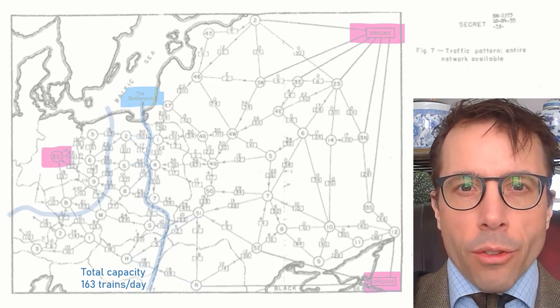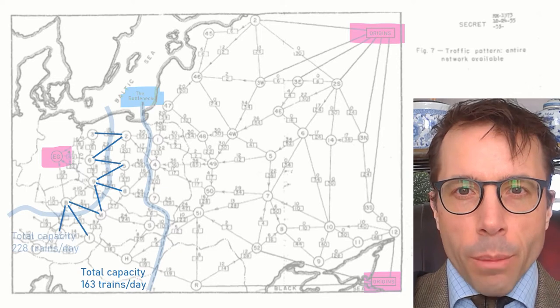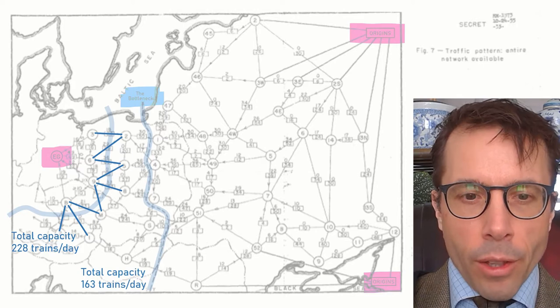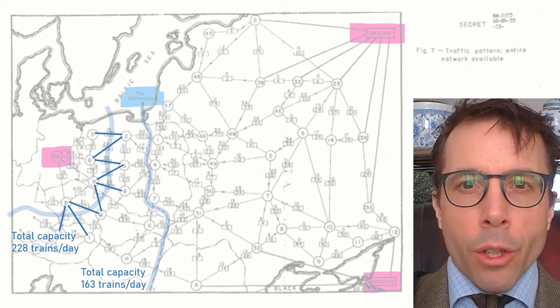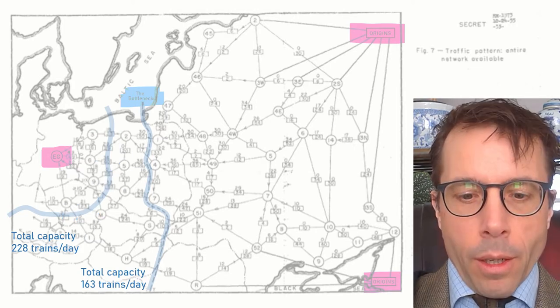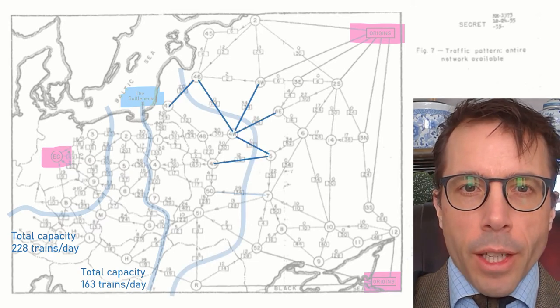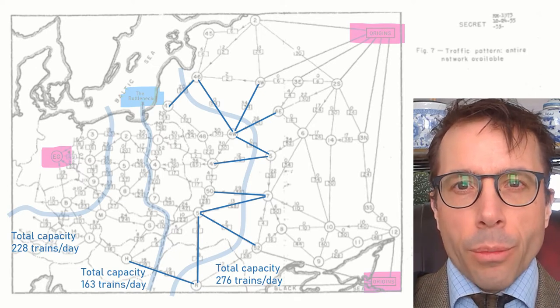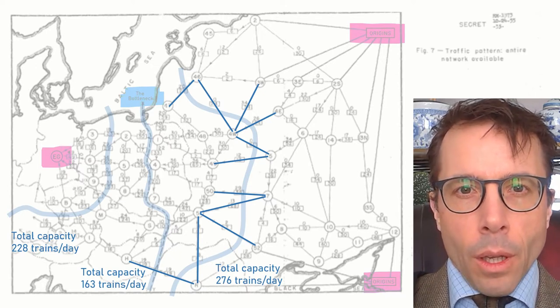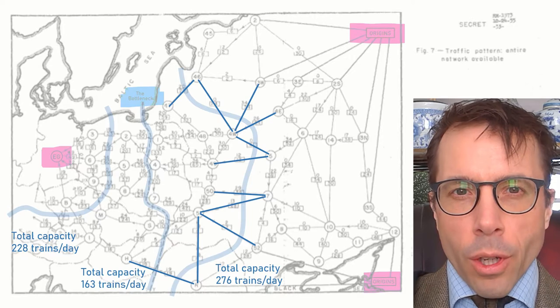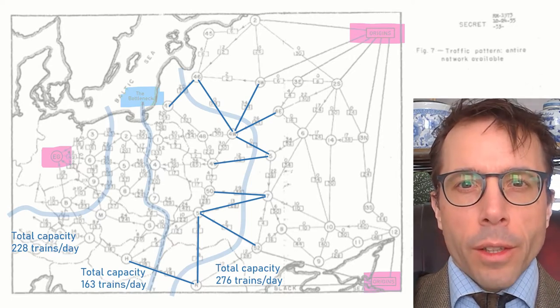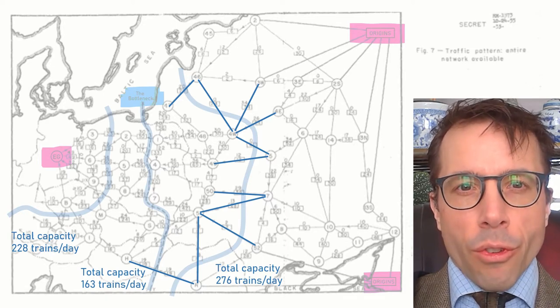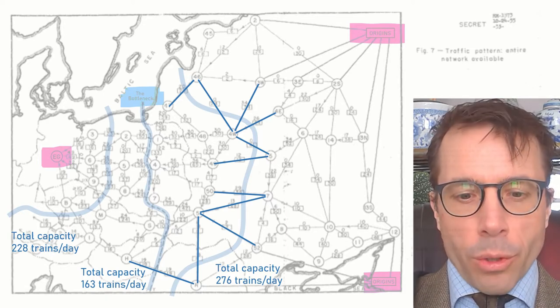We could of course do the same exercise for any line that separates East Germany from the refineries in the east. If we drew our separating line here further west, we get an upper bound of 228 train loads per day, and this separating line here further east gives us an upper bound of 276 train loads per day. The RAND Corporation considered all possible separating lines and the one that gave them the lowest upper bound was this one in the middle, which is why they call it the bottleneck.